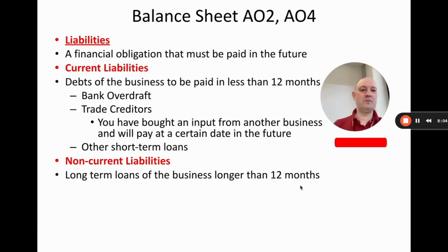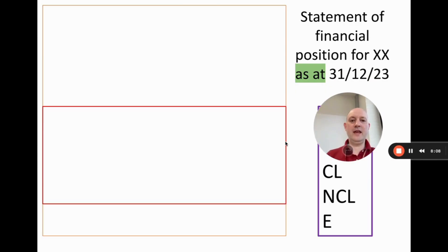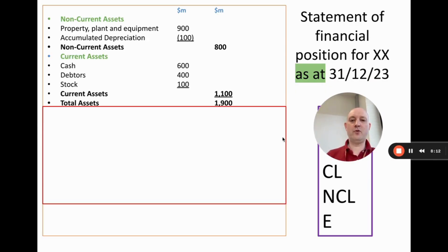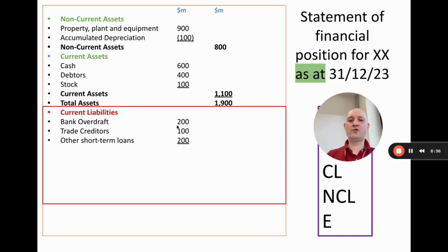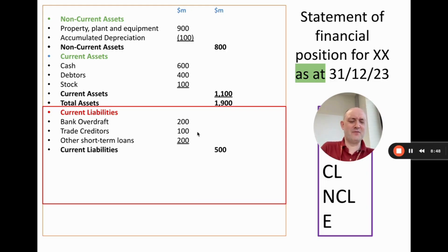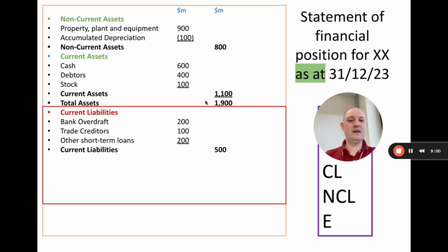Non-current liabilities are long-term loans, usually longer than 12 months — medium to long-term bank loans. Going back to the balance sheet: everything up to this point is identical to before. We now add liabilities. Note: with assets we do non-current first then current; with liabilities we do current first then non-current. We have bank overdraft 200 million, trade creditors 100 million, other short-term loans 200 million, totalling 500 million in current liabilities. These numbers are illustrative.